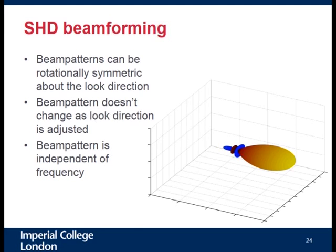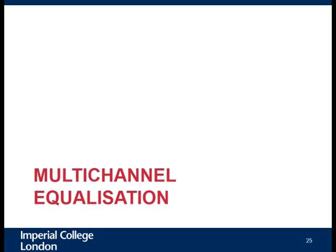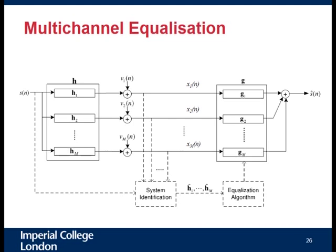With spherical harmonic domain beamforming, it's the same principle as space domain beamforming, but now we have a weighted sum of spherical harmonics rather than of the microphone signals themselves, and you end up with beam patterns where there's a single direction that is the main lobe. Beamforming gives us spatial sensitivity but doesn't actually do dereverberation in the typical sense — we're listening in one direction but reverberation from that direction passes completely unmodified.